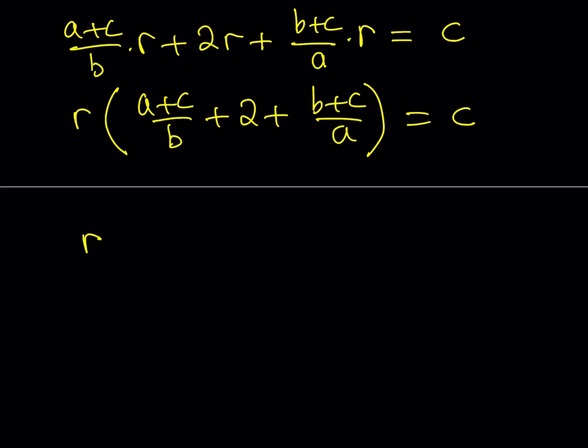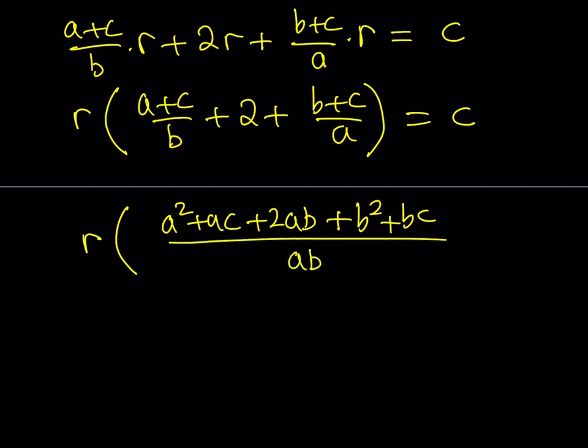It makes sense. The common denominator would be ab. So, I can just go ahead and multiply the a plus c by a. So, it's kind of like a squared plus ac, multiply the 2 by ab, which is 2ab, and then multiply this b plus c by b, which is going to give you b squared plus bc. And the whole thing is going to be divided by ab, and this is equal to c.